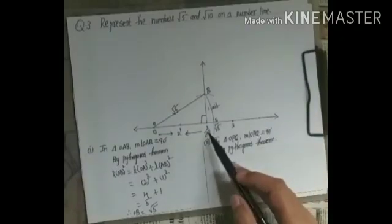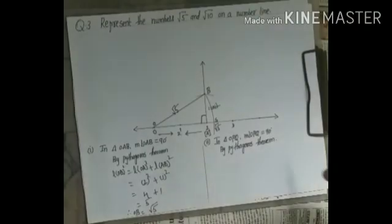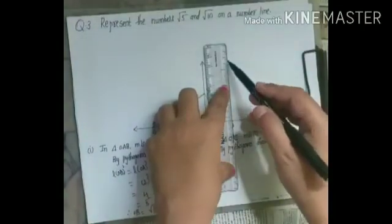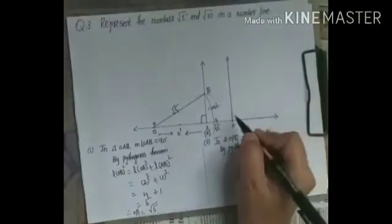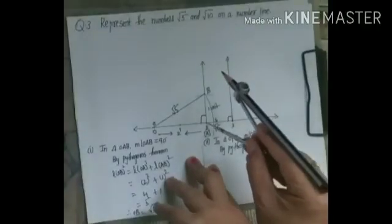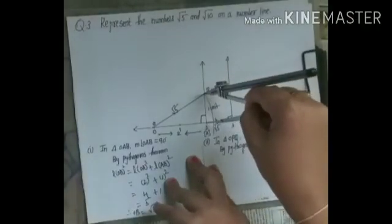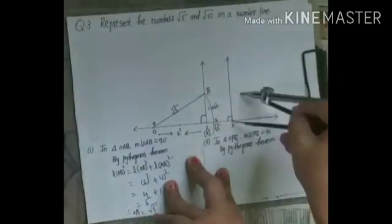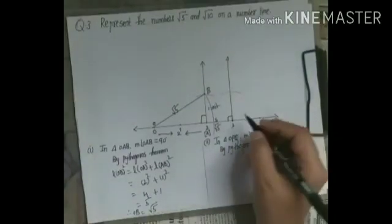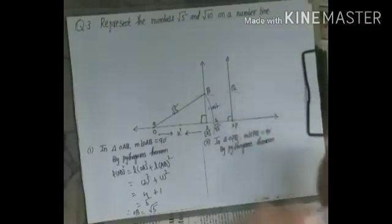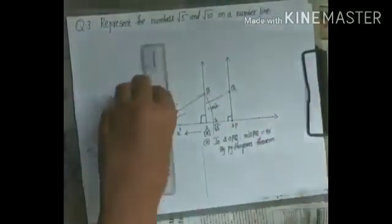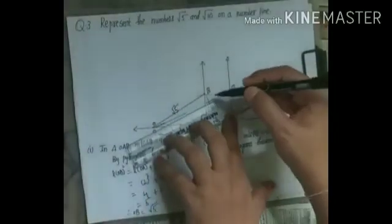Now similarly we have to construct √10. For √10, draw a perpendicular line from the point at unit 3. Give the perpendicular symbol. With the compass, take the same measurement of 3 cm (1 unit) and draw an arc. Name the foot of the perpendicular P and the top of the arc Q. Join O and Q to get the hypotenuse OQ.